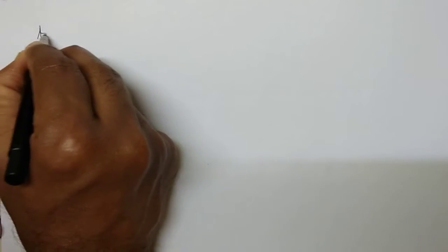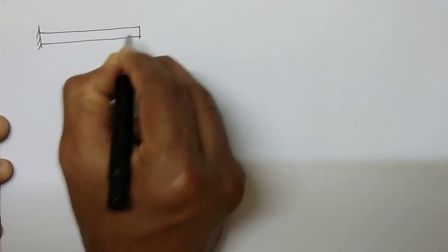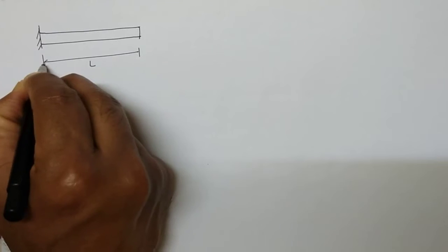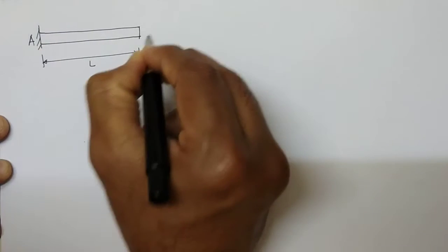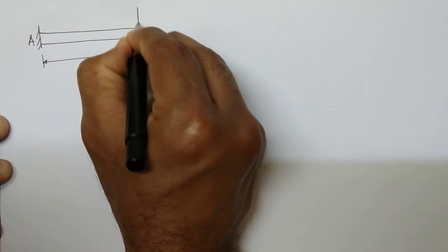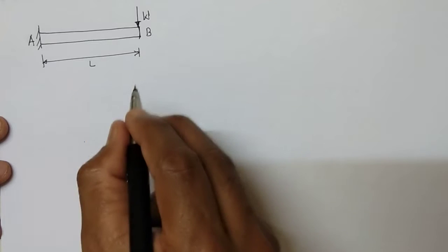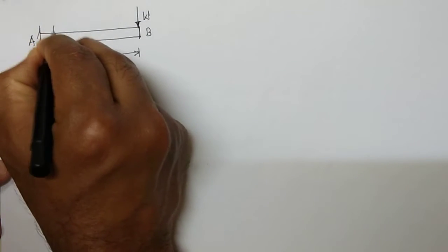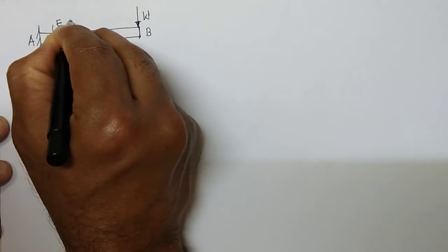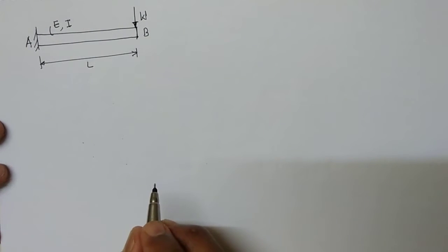Hello students. In today's lecture I am going to solve a simple problem on deflection of a beam by using Castigliano's theorem. Let us consider a cantilever beam of length L which is fixed at end A and free at end B. A concentrated load W is applied at the free end B, with material property E and I as the second moment of inertia of the cross section about its neutral axis.